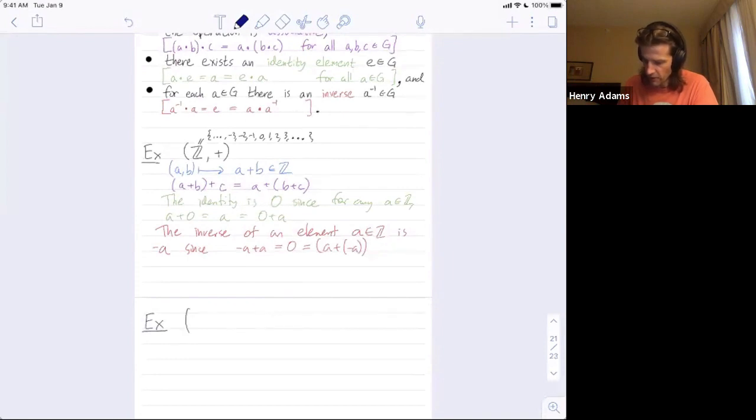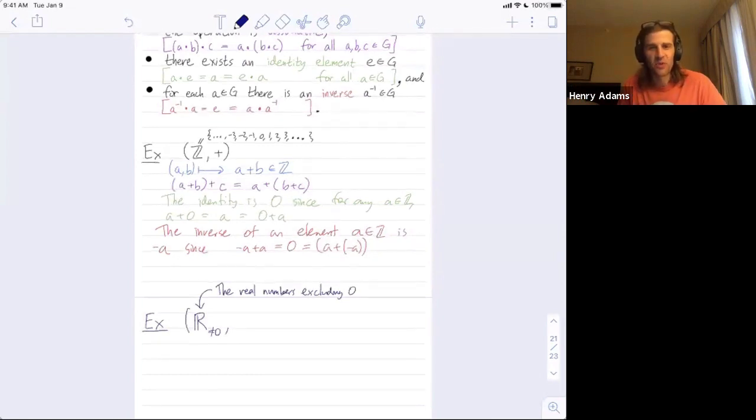Okay let's look at the real numbers excluding zero. So I put this subscript not equal to zero since I'm not allowing zero. So this is the real numbers excluding zero. Any guesses what operation I could equip this set with to make it a group? Like what symbol am I going to write as the operation? Any guesses?